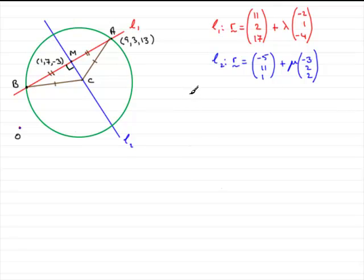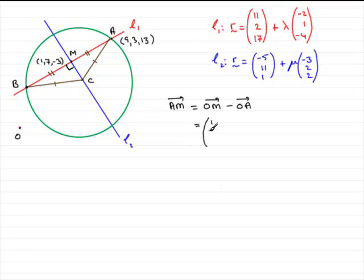So we start off by trying to get the vector A to M. In the usual way, the vector from A to M is the same as going from the origin to M minus O to A. We've got the coordinates of M, so we know the position vector of M — that is 1, 7, minus 3. Now we need to take away O to A, which is 9, 3, 13. So: 1 minus 9 = minus 8; 7 minus 3 = 4; minus 3 minus 13 = minus 16. So the vector AM is (minus 8, 4, minus 16).